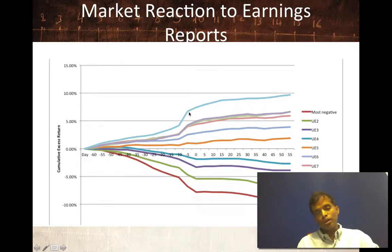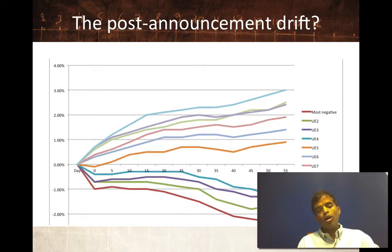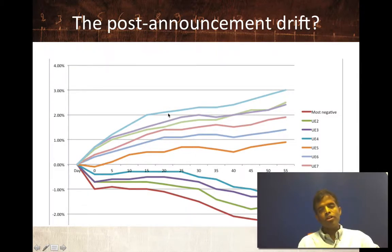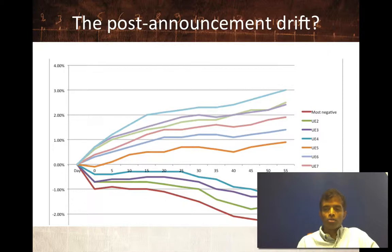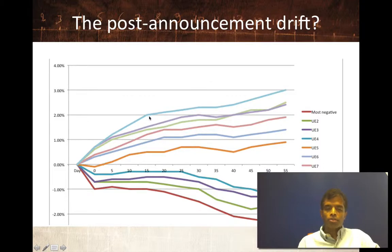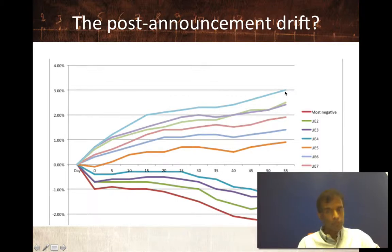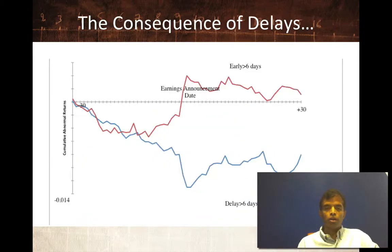The second surprising finding is what happens after the earnings report comes out. If you look at the most positive surprises and the returns after the earnings report, prices continue to drift up. This suggests that markets are slow learning. After the most positive surprises, prices tend to drift up; after the most negative surprises, prices tend to drift down. Only by about 3%, but if you could make 3% after the most positive surprises, that adds up over time. So there is a post-announcement drift that you and I could exploit.